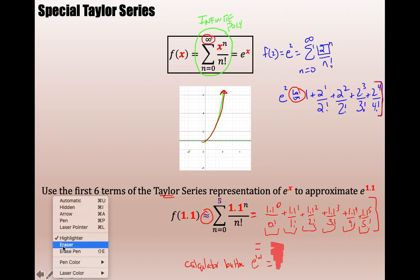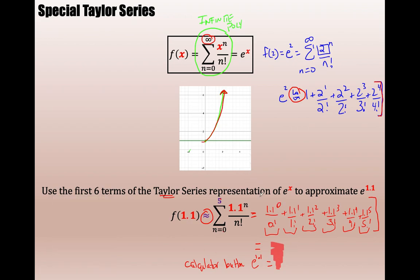Using the Taylor series approximation, I got about 3.001 — going to about four decimal places when I hit e to the 1.1 on the calculator. So using only six terms of a freaking infinite series, I got e to the 1.1 to the hundredths place. And all you have to do is add more terms. When you push e to the 1.1 on your calculator, it is programmed with the Taylor series representation — just with a lot of terms.